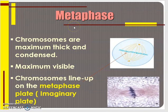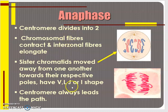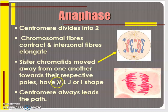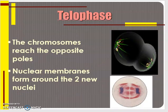After prophase, condensation of chromosomes continues. They become maximum short, maximum thick, and maximum visible, and arrange themselves on the metaphasic plate. Metaphase is followed by anaphase, in which the centromere divides into two and each daughter chromosome moves towards the opposite pole along the spindle fiber, appearing in different shapes — V, J, L, or I — depending on the position of the centromere, and the centromere always leads the path. Anaphase is followed by telophase, when chromosomes reach their respective poles and the nuclear membrane forms around the two newly formed nuclei.